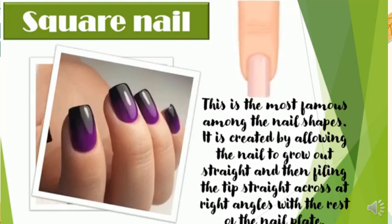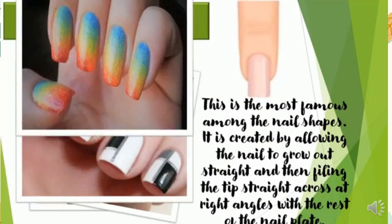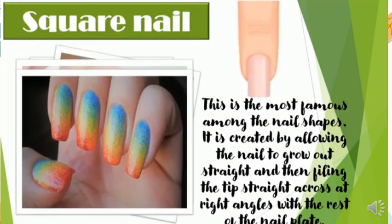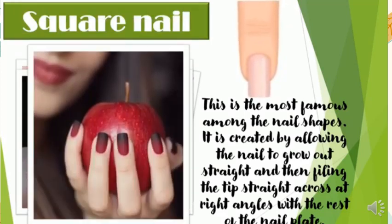Square nail — this is the most famous among the nail shapes. It is created by allowing the nail to grow out straight and then filing the tip straight across at right angles with the rest of the nail plate.